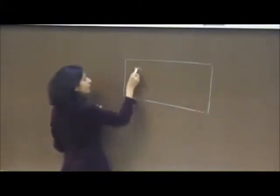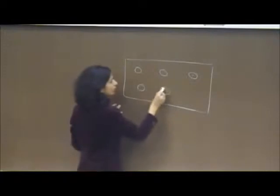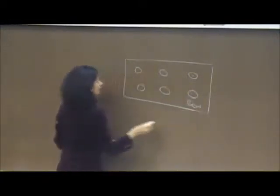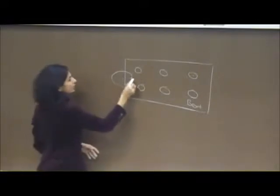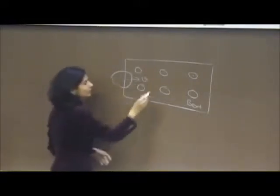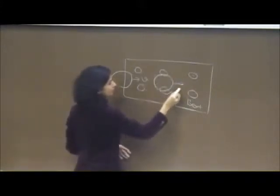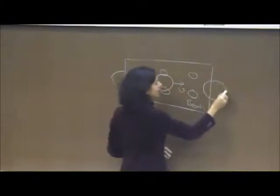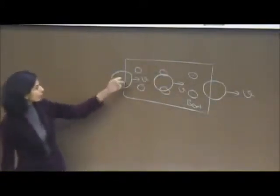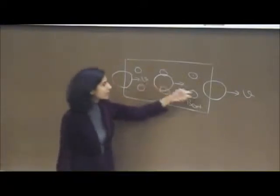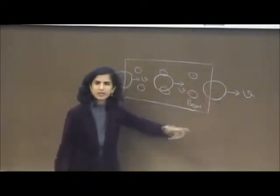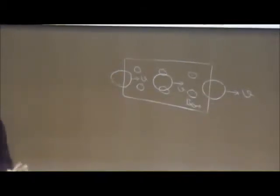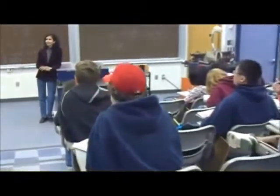Try another example: a magnetic field comes out of a square region. A coil is pushed in (half outside, half inside) moving with velocity V, then fully inside moving with V, then exiting with V. Determine the induced current direction in each of the three cases. Please talk to the person next to you and do one case at a time.